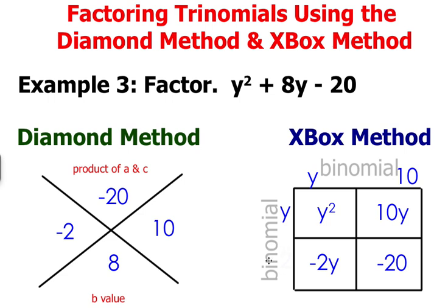Next in order to figure out this last term in this binomial ask yourself y times what value will give you negative 2y. That value is negative 2. And then finally negative 2 times 10 does equal to negative 20.